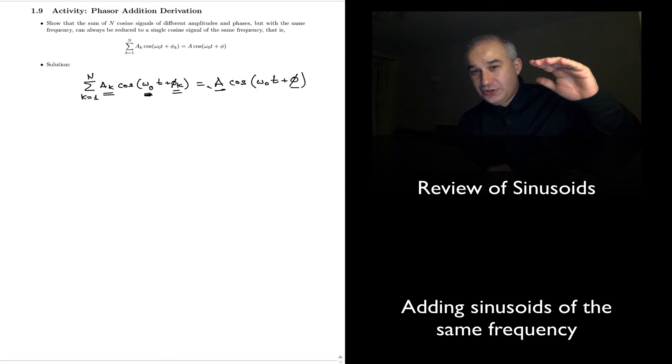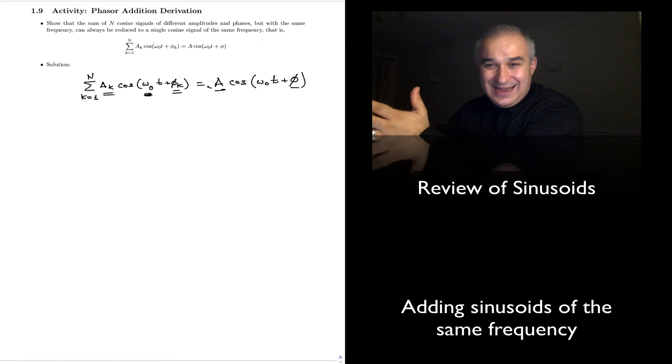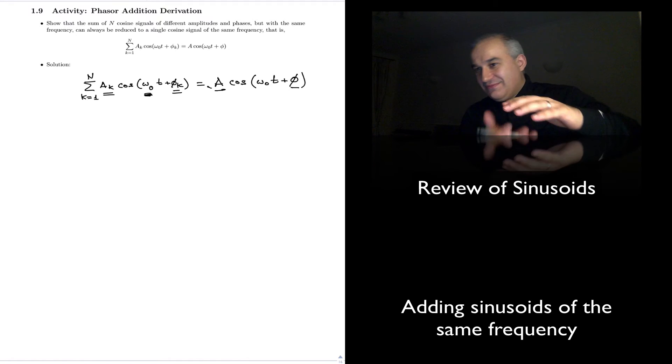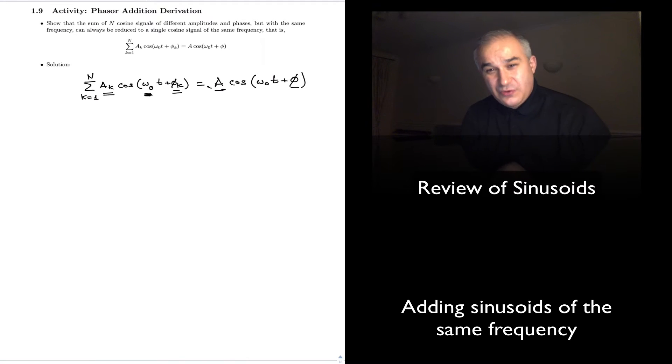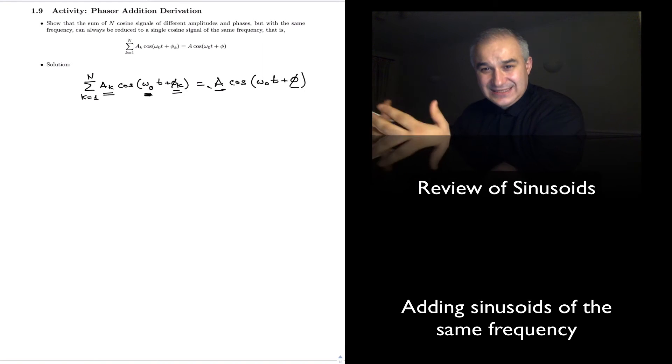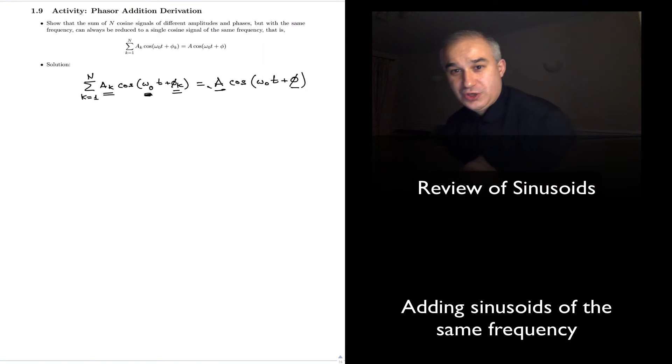Now, if you add a hundred sinusoids with different frequencies, you can get anything at the output. I mean, not a hundred. A hundred, a thousand, whatever. You add enough sinusoids, you can get a triangular signal at the output. You can get anything else. But not a simple sinusoid, necessarily. If they have the same frequency, it's a simple sinusoid. Let's show it.